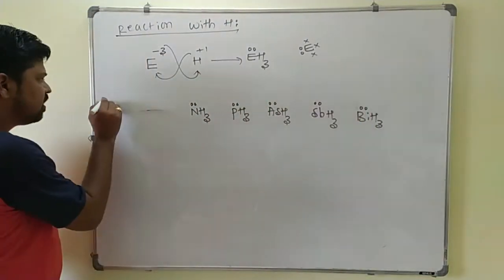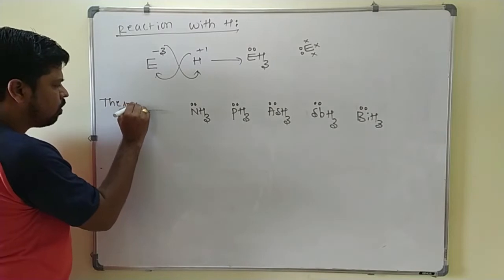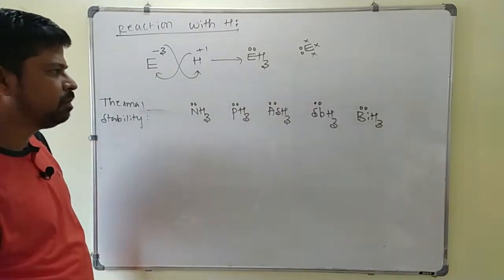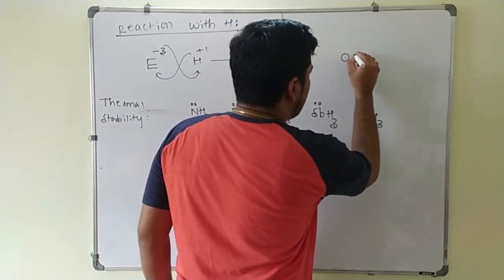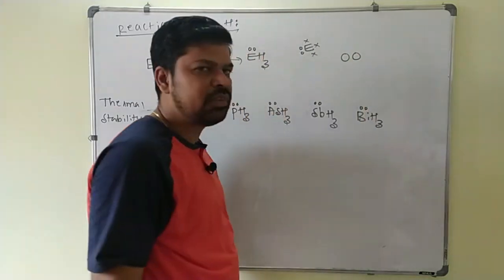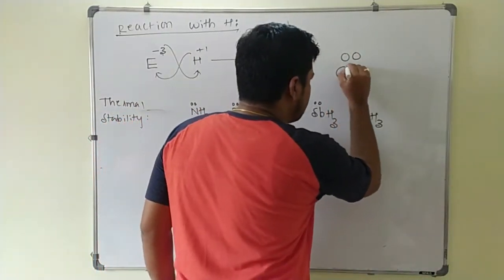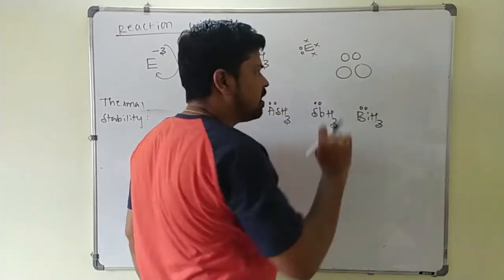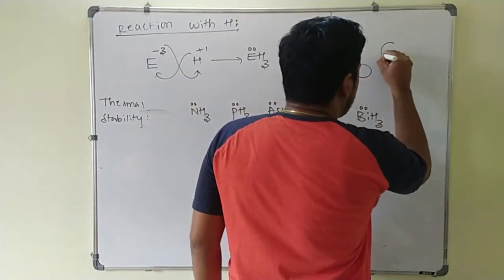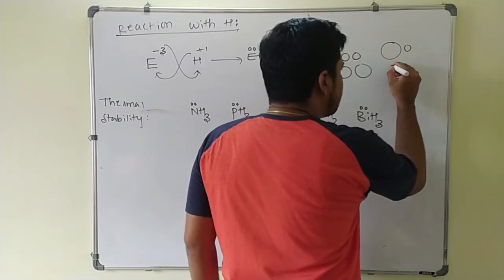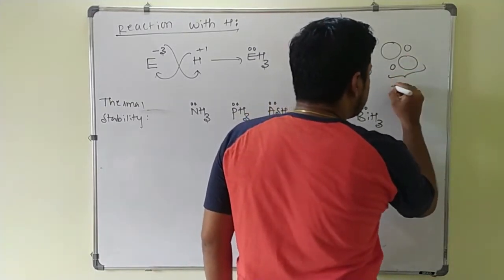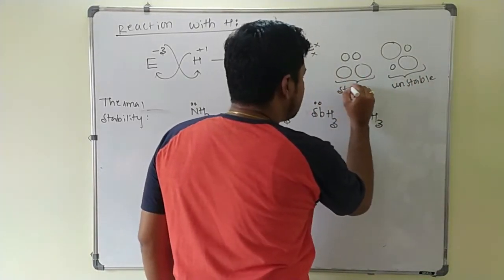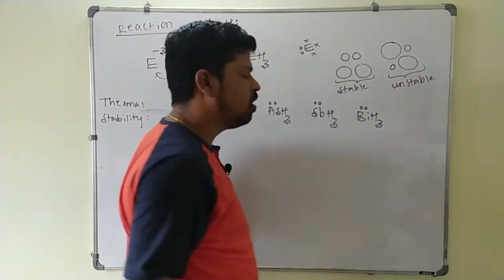Now we will discuss thermal stability. Keep in mind: when both atoms in a molecule are of similar size — whether both small or both large — the combination is stable. But if one atom is large and the other is small, this combination is unstable. Down the group, atomic size increases from nitrogen to bismuth, so the size difference between the central atom and hydrogen increases.